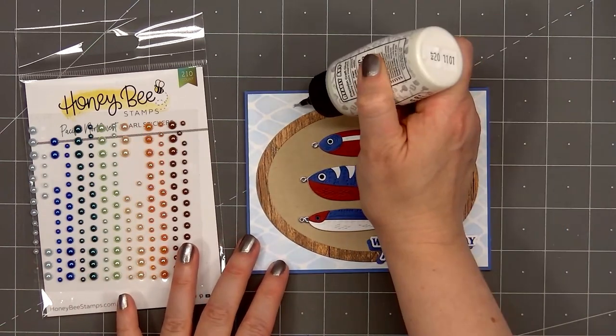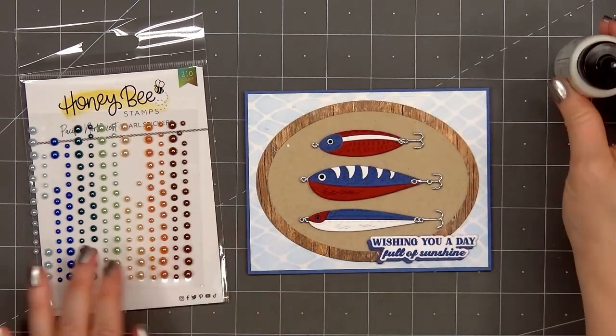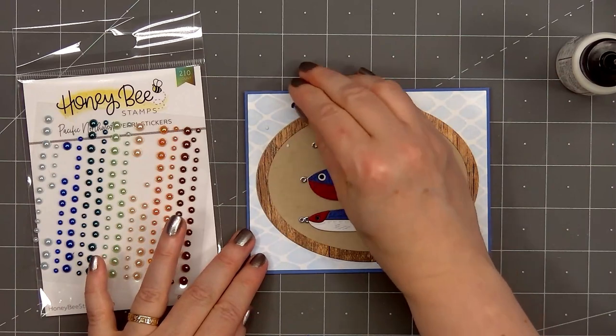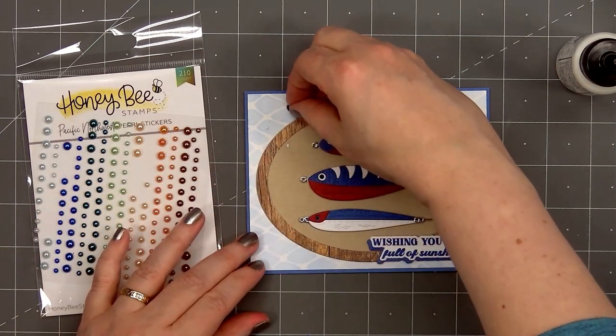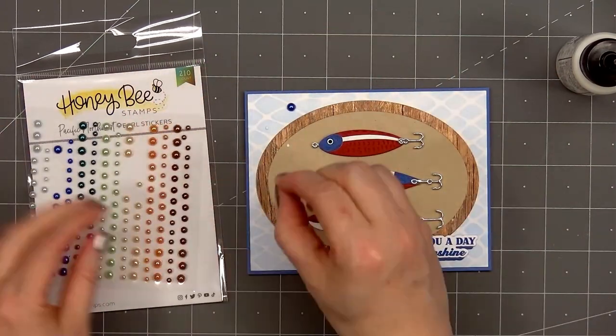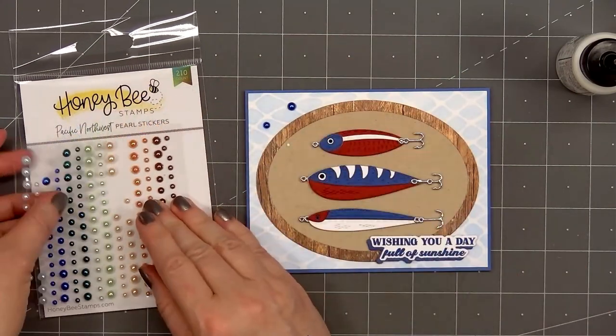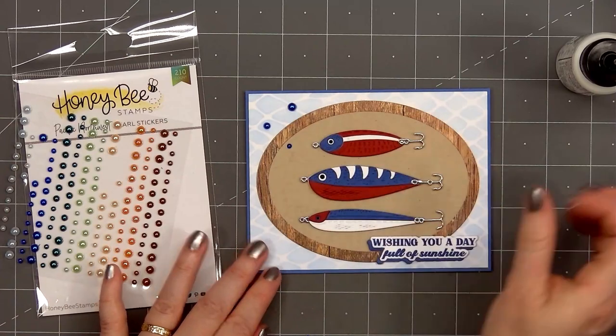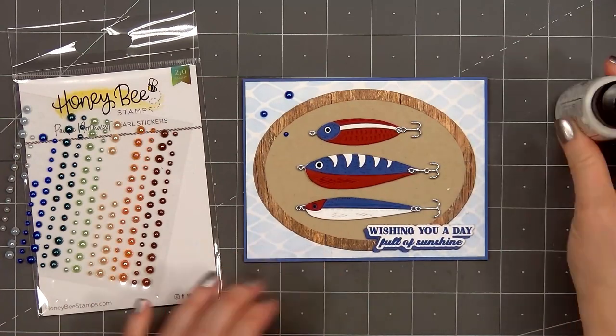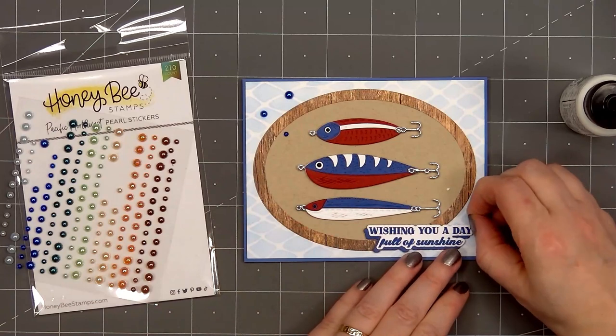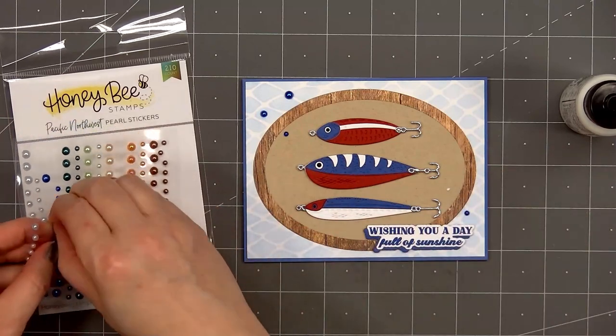For embellishments, I'm using the Pacific Northwest Pearl Stickers, this beautiful blue color. I'll put three in the upper left hand corner and two in the lower right hand corner. They do have adhesive on the back, but I am adding a little drop of glue just to make sure they stay in place, especially the pearls that are on the shimmer cardstock.